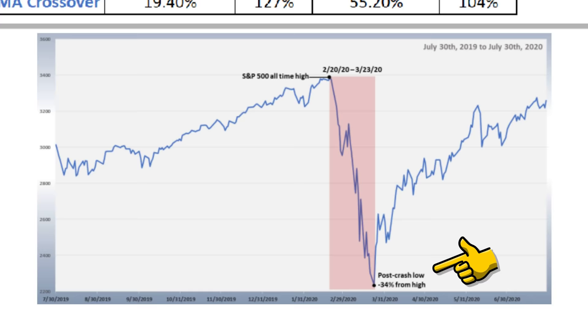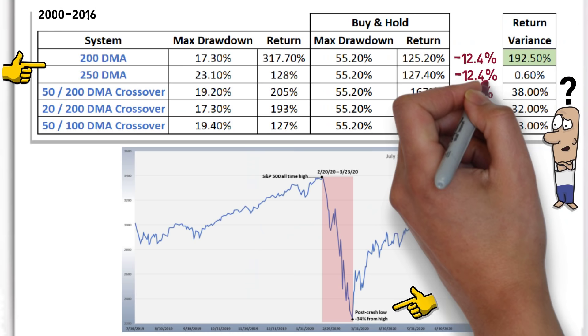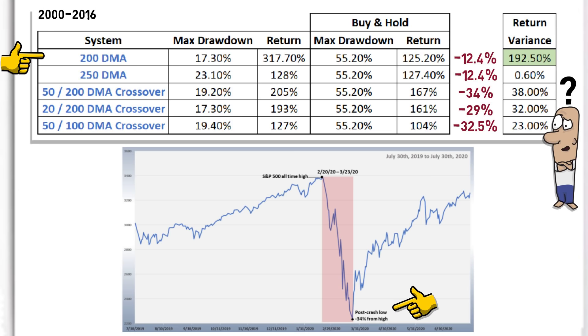The slowest strategy to react was the 50 and 200 day crossover strategy, enduring the full 34% drawdown, next the 50 and 100 day crossover with a 32.5% drawdown, the 20 and 200 day crossover with a 29% drawdown, whilst both the 200 and 250 day moving average strategies endured just a 12.4% drawdown, perhaps reinforcing the 200 day moving average strategy as the most appealing.